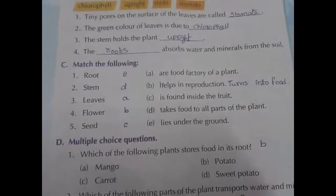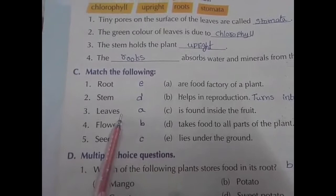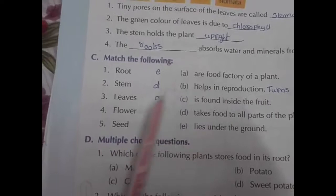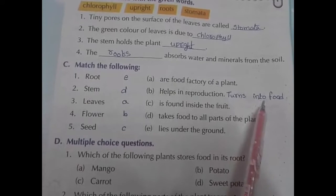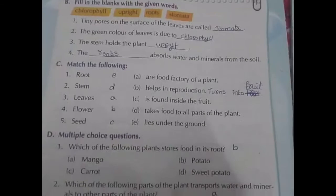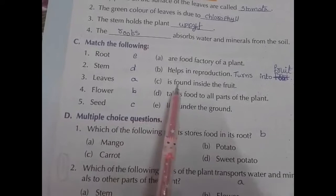Matching: Root lies under the ground. Stem takes food to all parts of the plant. Leaves are the food factory of a plant. Flower turns into fruit — note there is a spelling mistake here, you have to underline and write it down. Flower turns into fruit. Seed is found inside the fruit.